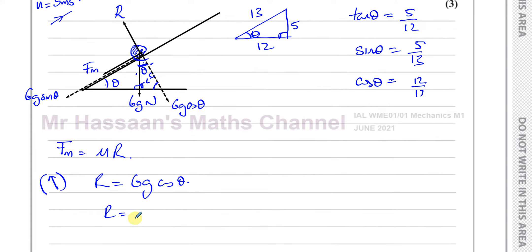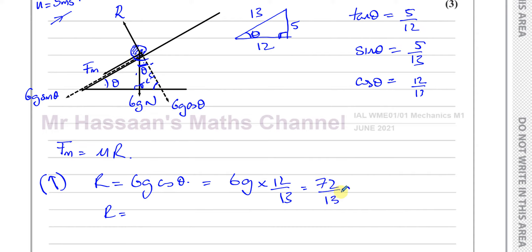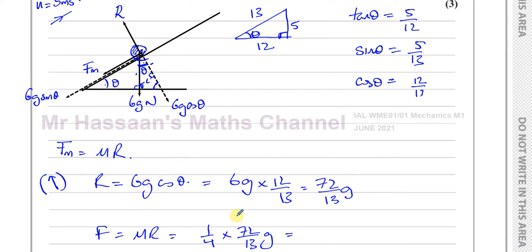Now R = 6g cos θ = 6g × (12/13) = 72g/13. For the frictional force, F = μR = (1/4) × (72g/13). Since 4 goes into 72 eighteen times, F = 18g/13 Newtons.